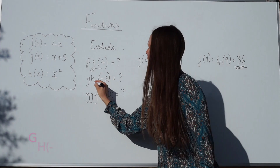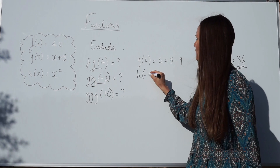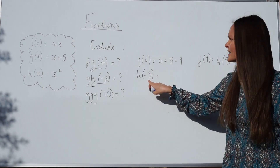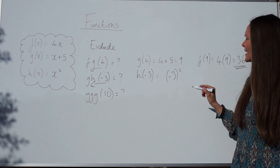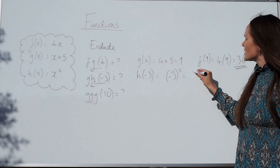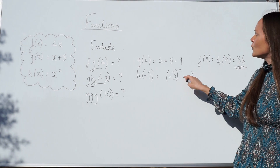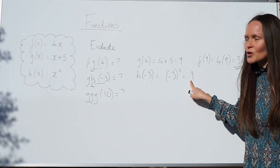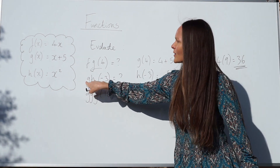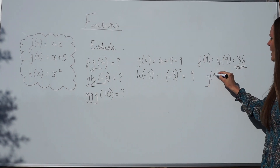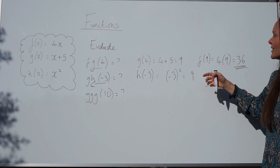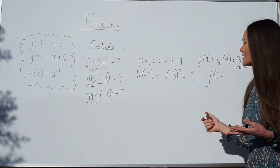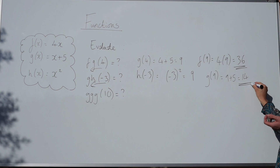For the next one, using the same method, first work out h of negative 3. The function h of x is x squared, so we need negative 3 squared. Make sure you put brackets around that number if using a calculator, because negative 3 times negative 3 is 9. If you forget the brackets, the calculator will give you negative 9, which is incorrect. Then substitute 9 into g of x: instead of x plus 5, we now have 9 plus 5, which gives 14.